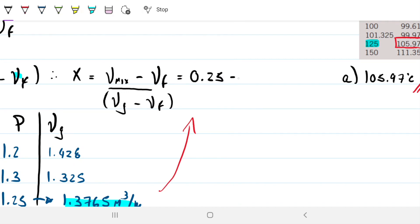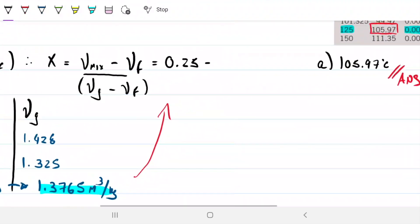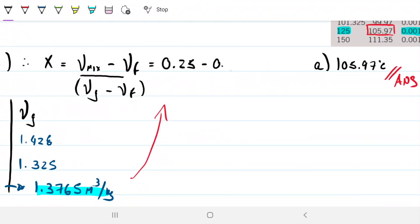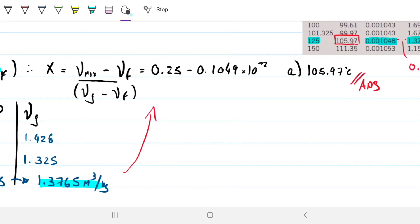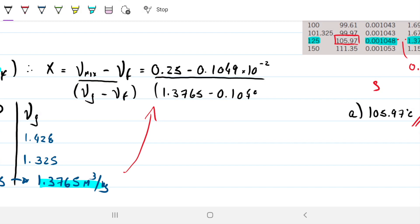Vmix is 0.25, that's the one we calculated in the beginning. Saturated liquid, that is 10 to the minus 2. So that's 0.001049 times 10 to the minus 2, and I'm running out of space. Just push this forward. Divided by the difference between the two. That is 1.3765 minus 0.001049 times 10 to the minus 2. And that allows me to calculate my X, which is 0.18099, and it keeps going on, so we can go ahead and approximate this to 18.1%.